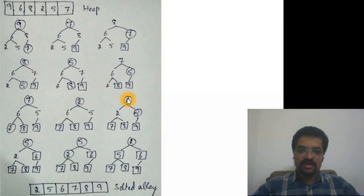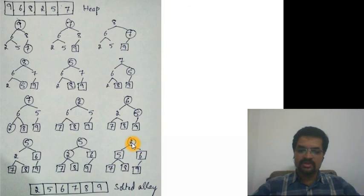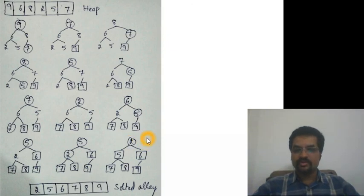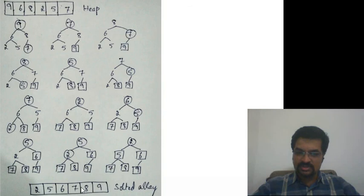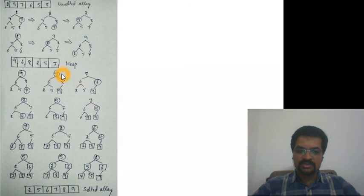We swap seven, it goes to its final position, and push down as far as possible so six takes the root's place. Then six and five are swapped; six goes to its final position and five is at the top, which already satisfies the heap property. In the last iteration, five and one are swapped; five takes the last position and the single remaining element is already a heap. We finish in n minus 1 iterations, which is five iterations in this case, and the resulting array is sorted. This is why we call it transform and conquer.